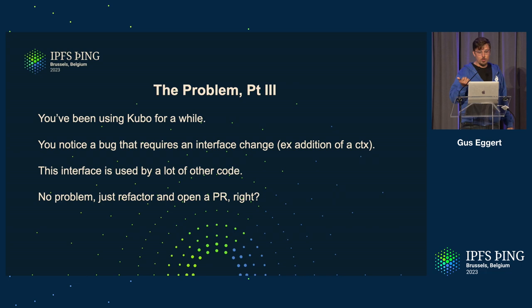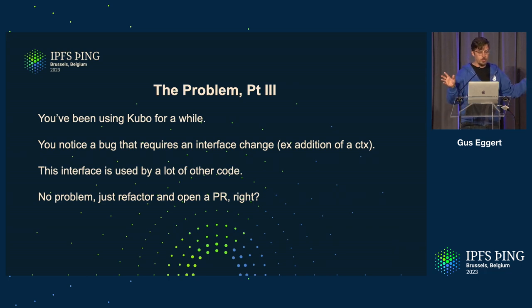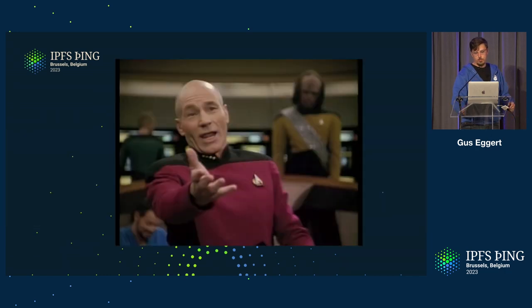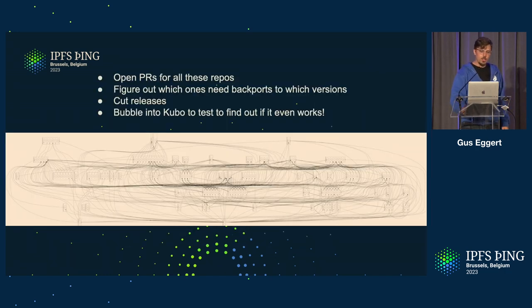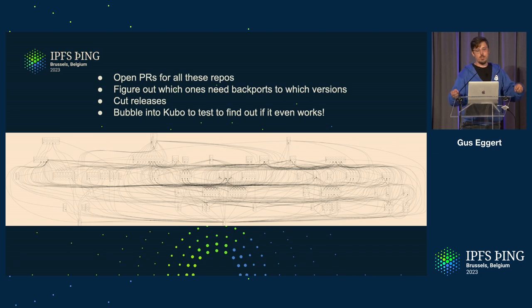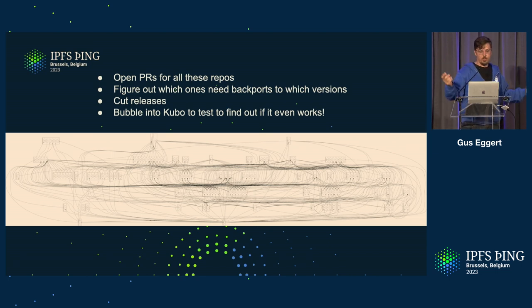Another scenario: you've been using Kubo for a while. There's a bug somewhere in one of those repos that's used by all the other repos. This one's close to my heart because I've gone through this. You just refactor it and open up a PR. Well, you've got to open up PRs for all these repositories, figure out which ones need back-ports to which versions, cut all the releases. And you can't even test any of it until you bubble it all up into Kubo where all the actual tests are.